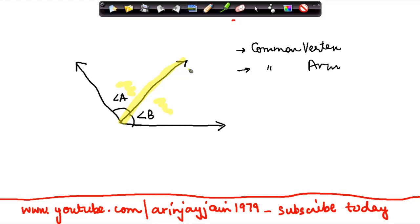This is common to both. Angle B is formed by this, this, and this. Angle A is formed by this, this, and this. So this particular arm which I have highlighted in yellow is common between both of them.